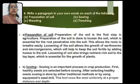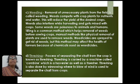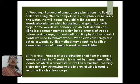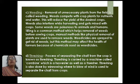Next we have to write about weeding. Weeds are unwanted plants which grow in the crop field. Removal of unnecessary plants from the field is called weeding. Weeds compete with crop plants for nutrients and water, which reduces the yield of desired crops. Weeds also interfere while harvesting and get mixed with the crops. Some weeds are poisonous to animals and humans. Tilling is a common method which helps removal of weeds before sowing. Manual methods like physical removal of plants are also used.